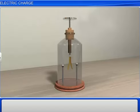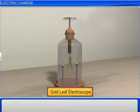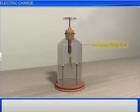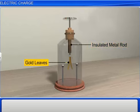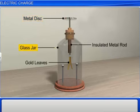To know whether a body has been charged, we use an instrument called a gold leaf electroscope. It consists of an insulated metal rod with two gold leaves or foils at one end and a metal disc at the other end. This setup is enclosed in a glass jar with the help of a tight cork, with the disc placed outside the jar.